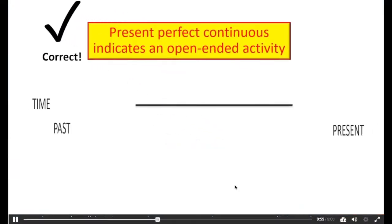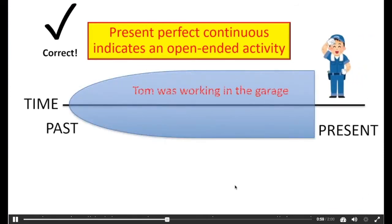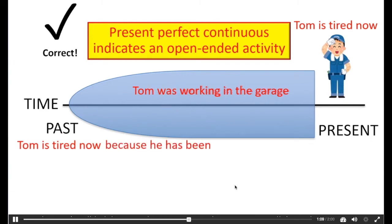Correct! Present Perfect Continuous indicates an open-ended activity. Tom was working in the garage, and Tom is tired now. Tom is tired now because he has been working in the garage.